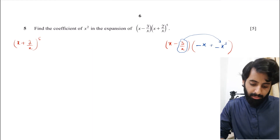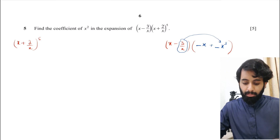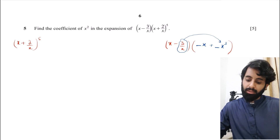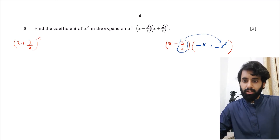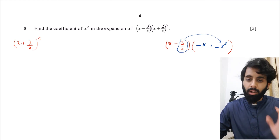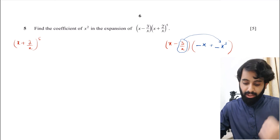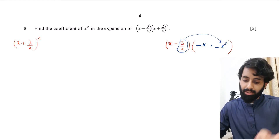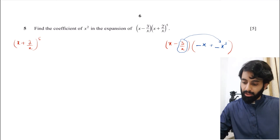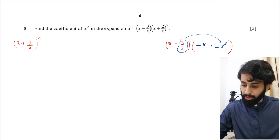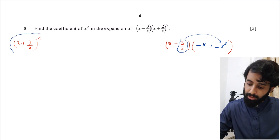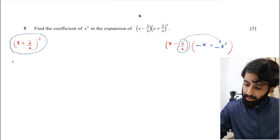If you have a term that has x in it, you need to multiply it with another term that has x in it, so that when the two get multiplied the end result is x². Then (−3/x) needs to get multiplied by a term that has x³ in it — because (1/x) multiplied by x³ gives x². So I need to find the term in x and the term in x³ from the expansion. I want the coefficient of x and the coefficient of x³.